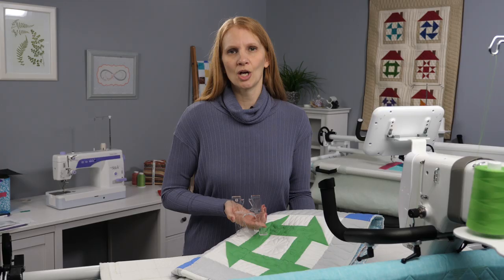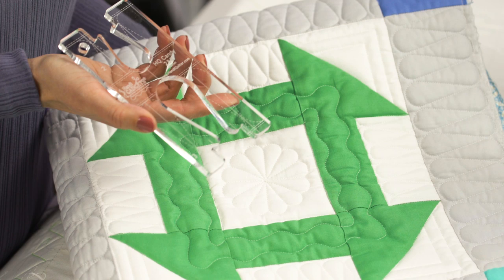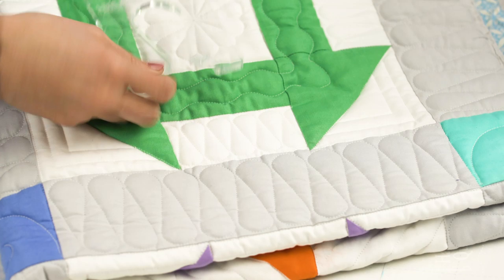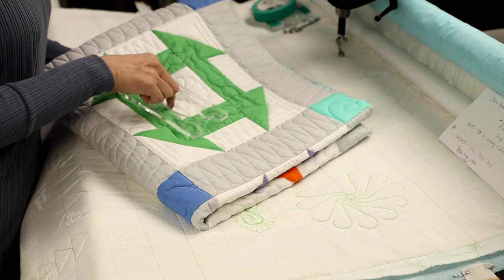With the candy ruler, you will notice that there are two different sizes, a two inch and a three inch. Let me show you how those can be used in a block. We have this little section here that we used the two inch ruler in. And then the sashing, we need it a little bit bigger, so we put the three inch in.